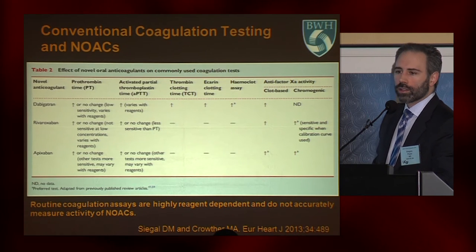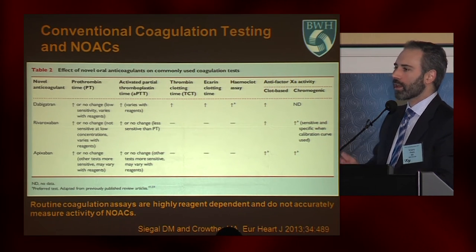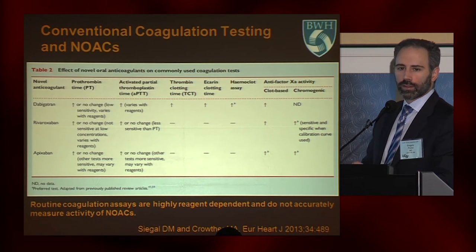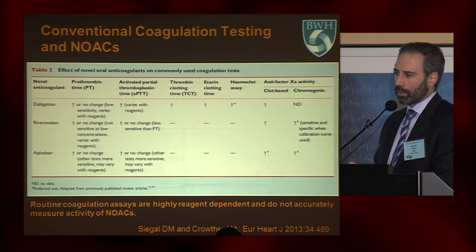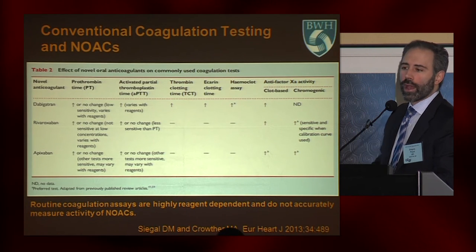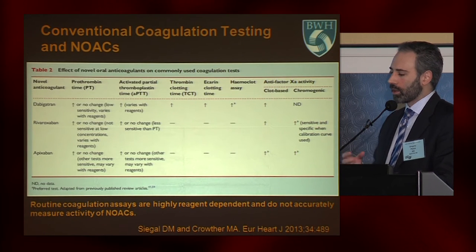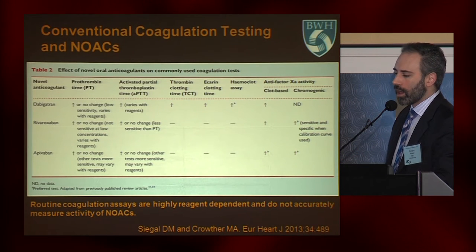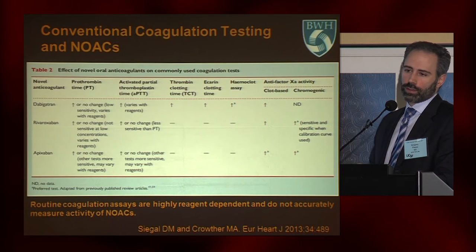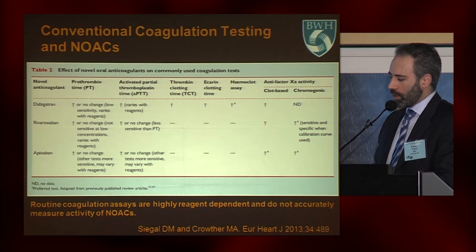Another challenge is that we don't have tests that can reliably predict the level of anticoagulation a patient may have after taking a NOAC. The usual coagulation studies we're used to using, such as the PTT or the PT, are relatively unreliable. There are some investigational techniques that can tell us if a patient has a NOAC on board and if they're anticoagulated, but those are not widely available.